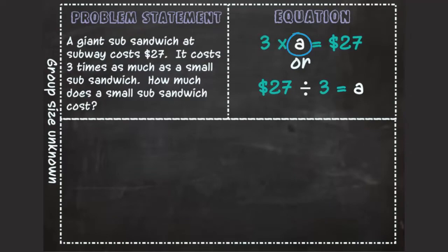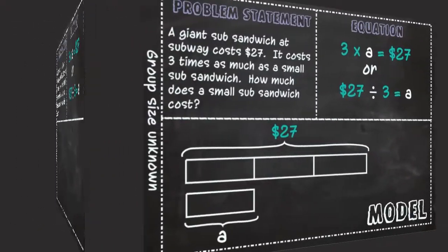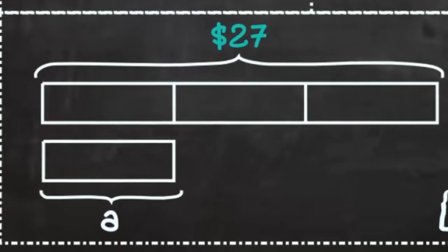The product will tell you how much is in all groups combined. Using this information, you will need to draw and label a bar model to show the unknown group size.